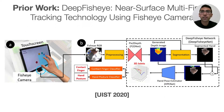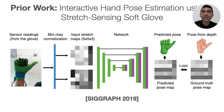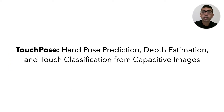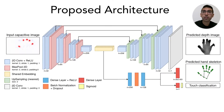Prior works have looked at various approaches to capture this 3D hand pose. For instance, DeepFisheye uses a fisheye camera mounted to the touch screen to predict which finger is touching the screen. Glosser et al. proposed a stretch sensing glove using a matrix of capacitive sensors embedded into a flexible glove. All these prior works required additional hardware such as cameras or gloves for 3D hand pose estimation. In response, I present TouchPose, a multitask convolutional neural network for 3D hand pose estimation from only the capacitive images without any external sensors.